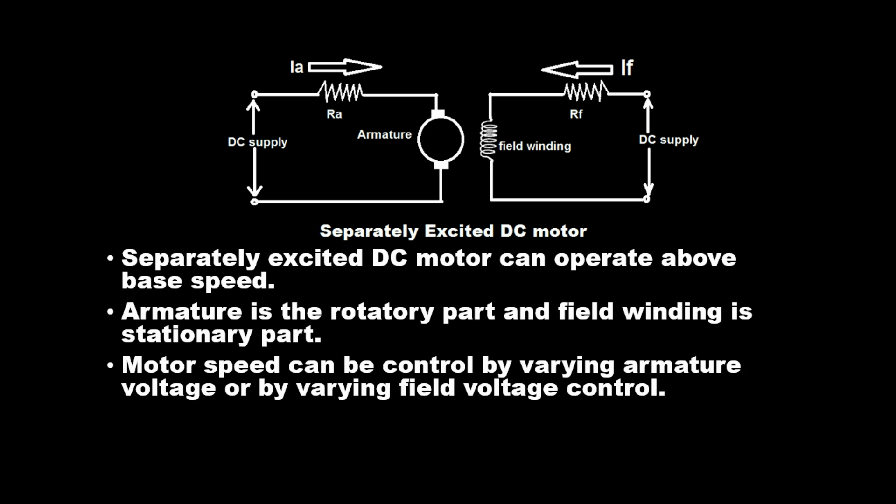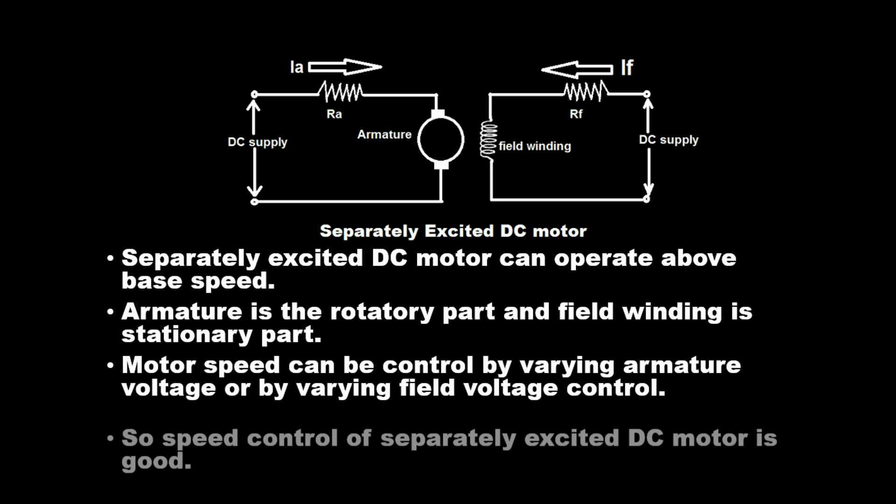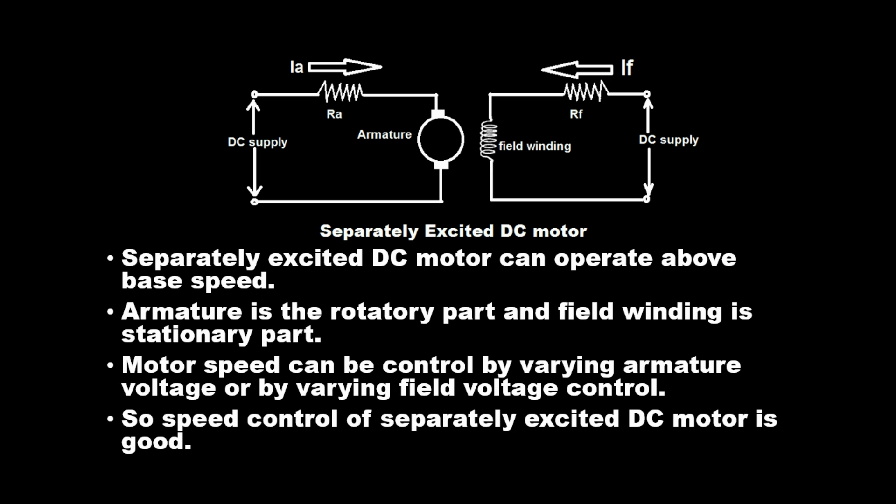Motor speed can be controlled by varying armature voltage or by varying field voltage control. So the speed control of the separately excited DC motor is good.